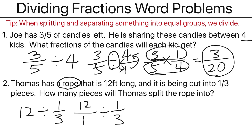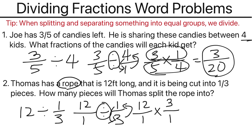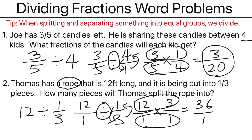The next step is to divide the fractions by using keep, switch, and flip. So 12 over 1 is what we keep, then the division will become multiplication, and then we will flip the fraction to 3 over 1. Now we can multiply across: 12 times 3 is 36, 1 times 1 is 1. So that means there are a total of 36 pieces which Thomas will split the rope into.